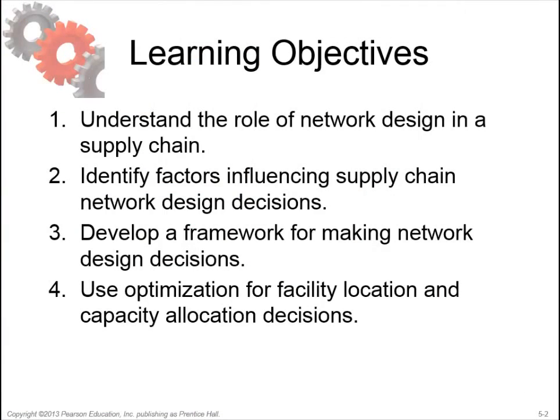What do we want to learn in this fifth chapter? The first learning objective is to understand the role of network design in a supply chain. The second is to identify factors influencing supply chain network design decisions. The third is to develop a framework for making network design decisions. And the last one is to use optimization for facility location and capacity allocation decisions.